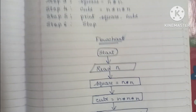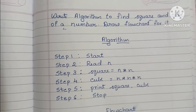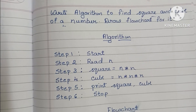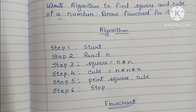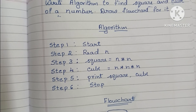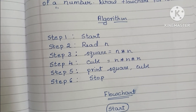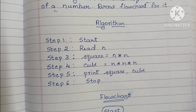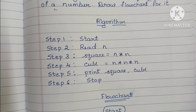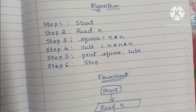So guys, this is the flowchart and algorithm to find square and cube of a number. All the best. If you like my video, please like and subscribe to my channel. Thank you for watching. All the best.